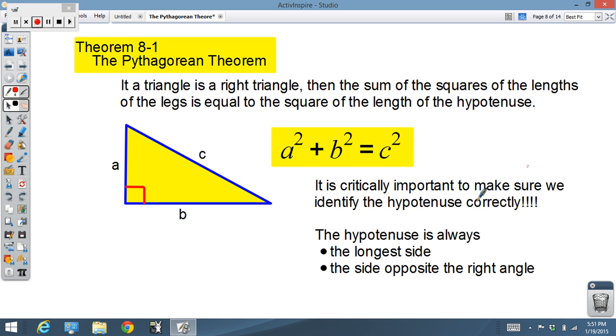Now we're ready for the Pythagorean Theorem. Here it is: If a triangle is a right triangle, then the sum of the squares of the lengths of the legs is equal to the square of the length of the hypotenuse. The legs are the sides that are adjacent to the right angle, so a and b are the legs. The hypotenuse is across from the right angle. So Pythagorean Theorem tells us that a² + b² = c².